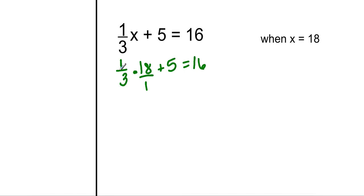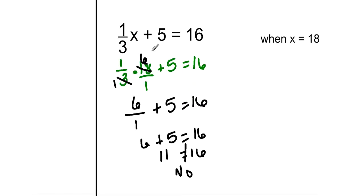Remember 18 is 18 over 1. So now I must simplify before I multiply. Or I can multiply straight across, but I want to simplify first. I can't simplify this way, can't this way, so I want to look across. 3 goes into 3 once, 3 goes into 18 six times. 1 times 6 is 6, 1 times 1 is 1, plus 5 equals 16. Well really this is just 6 plus 5 equals 16. Well 6 plus 5 is 11. Does 11 equal 16? No. The answer to this is no. 18 is not a solution for this equation.